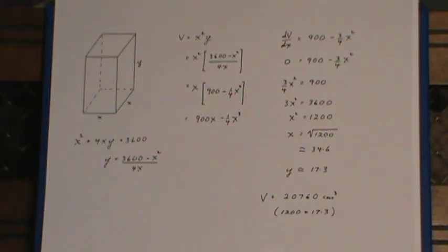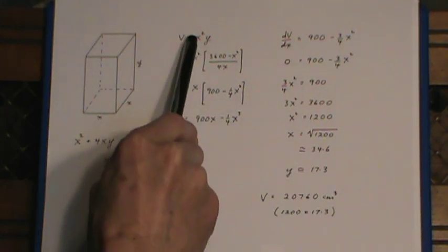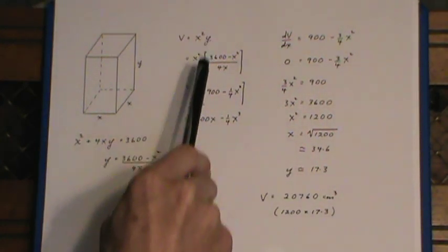And if you want the maximum volume then, this is it here. I got that volume by taking 1200 times 17.3. That's the x squared times the y.